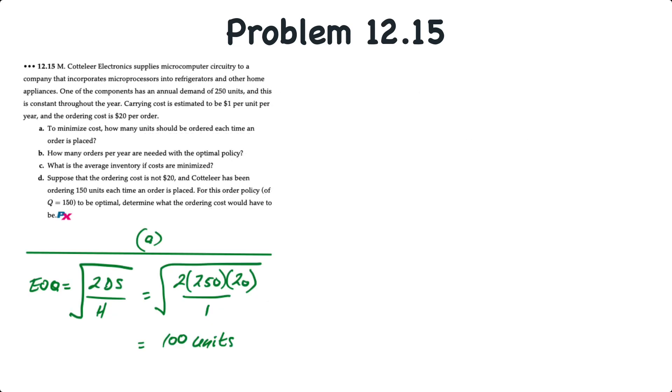For requirement A, we'll calculate EOQ using our standard formula, the square root of 2DS over H. So that's equal to the square root of 2 times 250 times 20 over 1. That's 100 units.